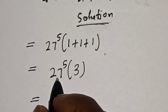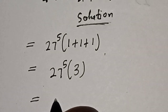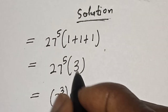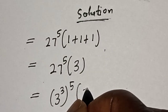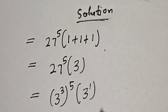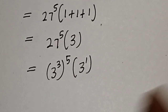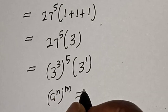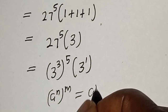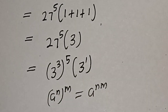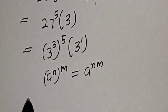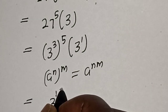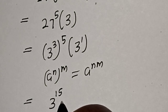So this is equal to 27 raised to power 5, which can be written as 3 raised to power 3, raised to power 5, multiplied by 3 raised to power 1. Take note of this rule: if you have a raised to power n, raised to power m, this is equal to a raised to power n times m. Then this is equal to 3 raised to power 3 times 5, which is 15.